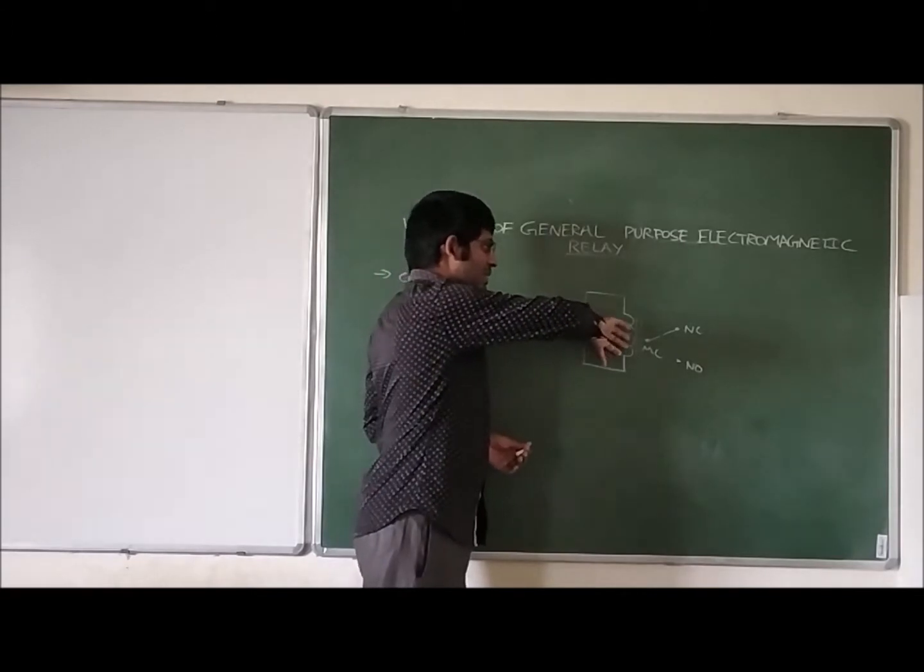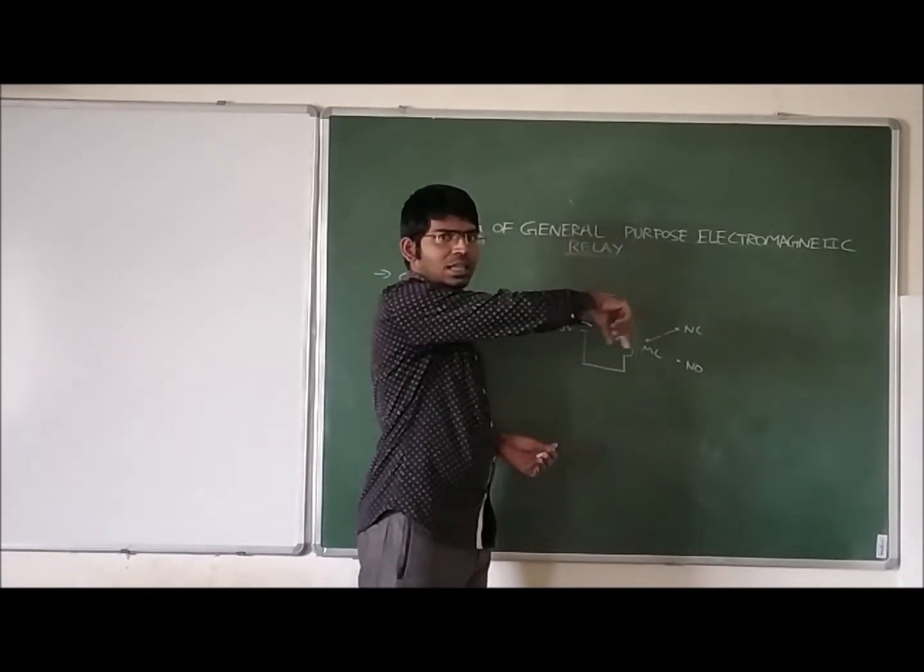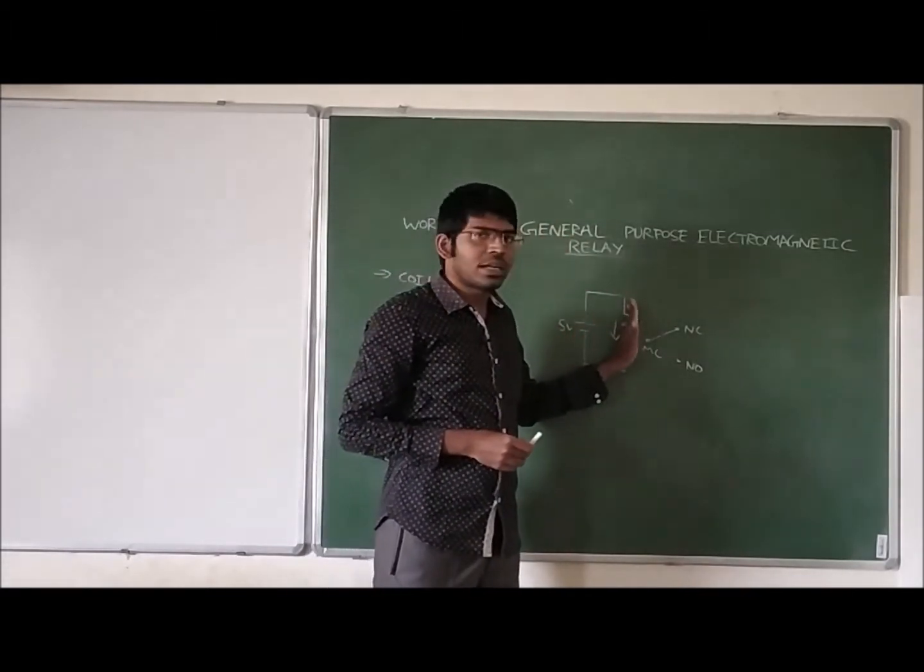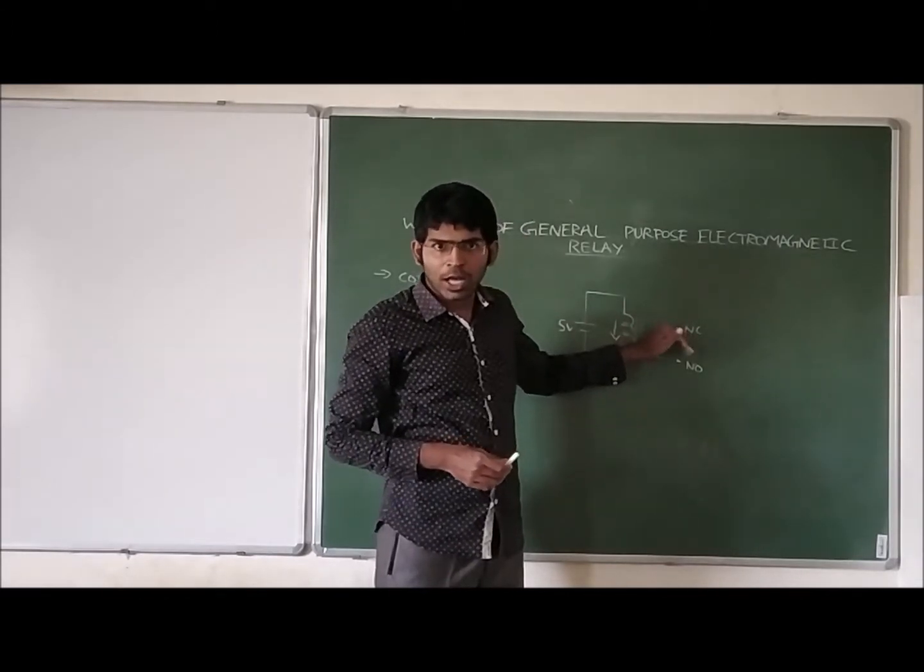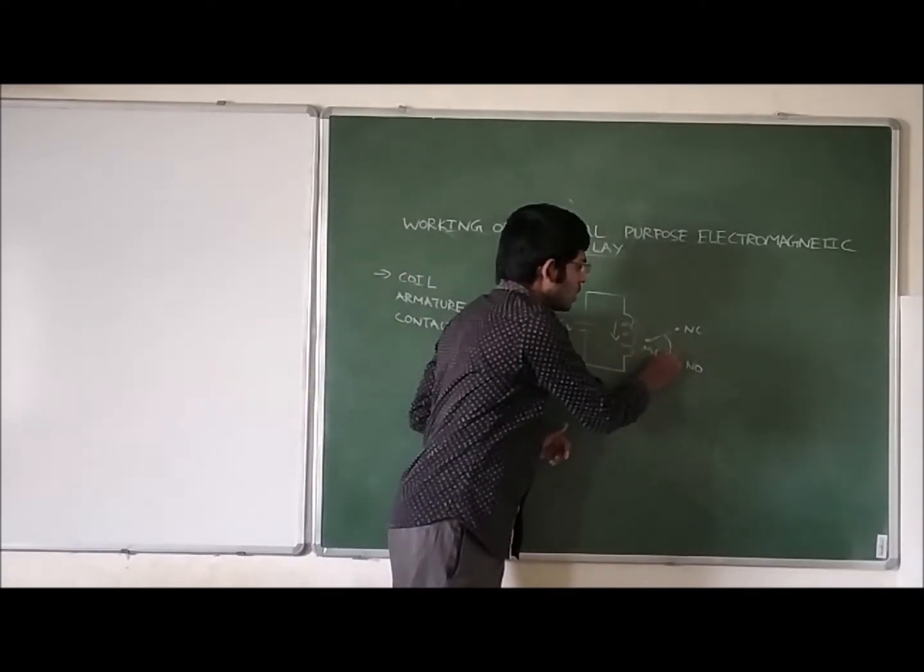So because current is in this direction, the magnetic field lines, magnetic flux lines, are observed in the clockwise direction. This magnetic field is attracting the armature from normally closed to the normally open position.